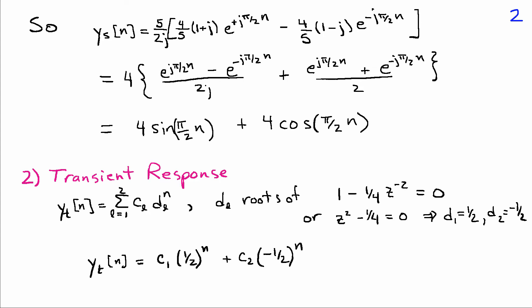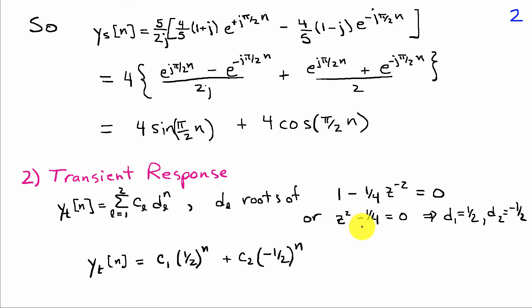The transient response has the form of a sum of terms, from 1 to the order of the difference equation (which is 2), of constants c_l times exponentials d_l^n. The d_l's are the roots of the characteristic equation, which here is 1 - (1/4)z^-2 = 0. Multiplying through by z^2 gives z^2 - 1/4 = 0, yielding roots d1 = 1/2 and d2 = -1/2. So the transient response is c1·(1/2)^n + c2·(-1/2)^n.